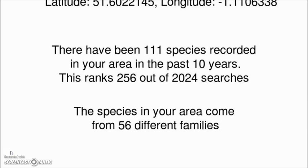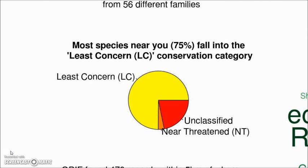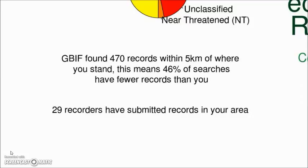We get some information about how many families of species come from our area. Here we've got data from the IUCN which we got from the Encyclopedia of Life — across all the species, what proportion fell into each of the IUCN threat categories. We can see that most of the species in our area, 75%, are in the least concern category. We've got another couple of natural language statements: 470 records recorded in our area, and 46% of searches have fewer records than us. And we find out that 29 recorders have submitted records in our area.